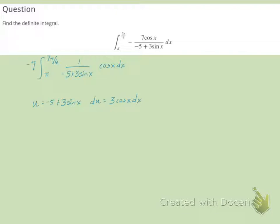But I just have a plain cosine, so I'll divide by 3 and I'll get 1 third du equal to cosine x dx.